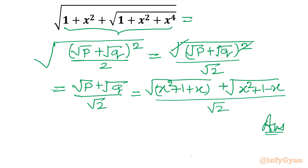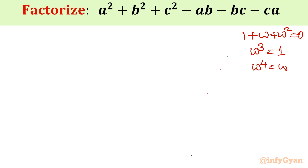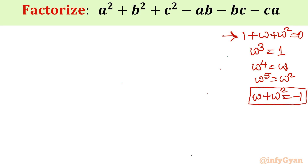Now come to question number 2. We have to factorize the given expression a square plus b square plus c square minus ab minus bc minus ca. I will begin with the cube root of unity concept. We know that 1 plus omega plus omega square equals 0, and omega cube equals 1. So omega power 4 equals omega, omega power 5 equals omega square, and so on. From the first equation, omega plus omega square equals minus 1. I will mainly use these results of cube roots of unity.